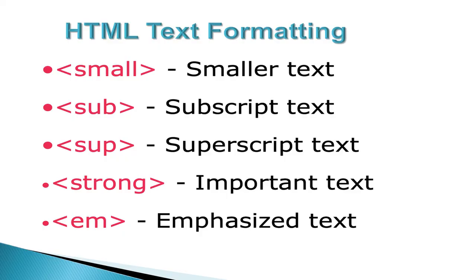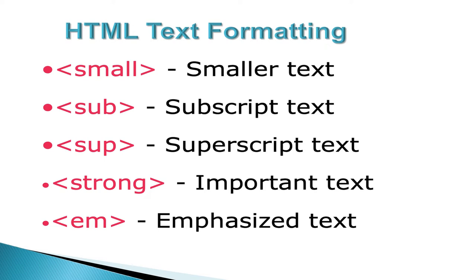We have some more text formatting tags. 'Small' will display smaller text. 'Sub' will display subscript text. 'Sup' will display superscript text. 'Strong' makes the text important, and 'em' makes the text emphasized. We have six different headings: h1, h2, h3, h4, h5, and h6. The size of h1 is larger than h2, and accordingly the size reduces. These are the six heading commands.